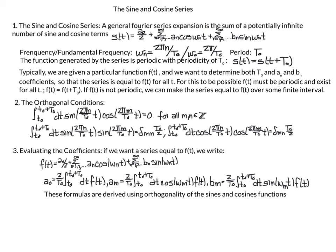A general Fourier series expansion is a sum of a potentially infinite number of sine and cosine terms. We want this infinite sum of cosines of different frequencies and sines of different frequencies, plus a real number coefficient, to equal some function we're trying to approximate. The frequency omega_n equals 2*pi*n over T_0, where T_0 is our period, and a function generated by such a series is periodic with period T_0, so s(t) = s(t + T_0).